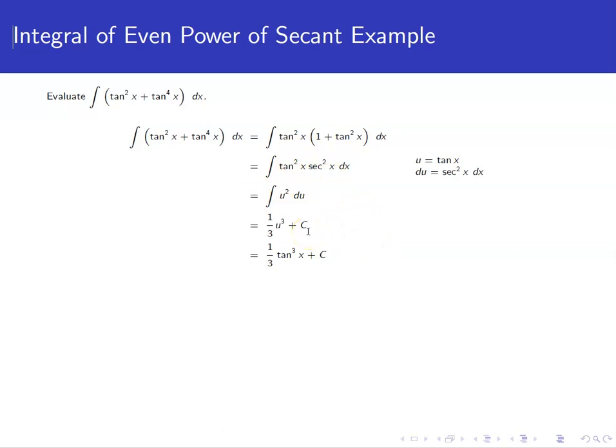That's straightforward to anti-differentiate. We get one-fourth u cubed plus c. And now, plugging back in what we had for u, we get one-third tangent cubed x plus c for our final answer.